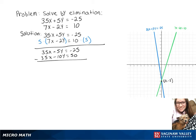Now we can subtract our second equation from our first equation, which leaves us with 15y equals negative 75. Dividing both sides by 15 gives y equals negative 5.